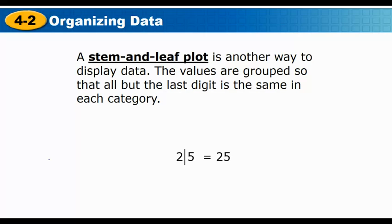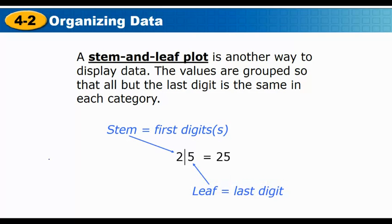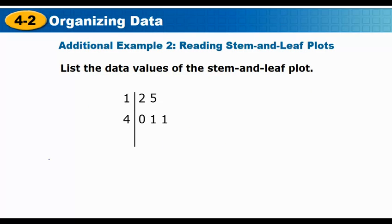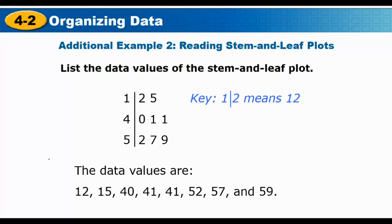A stem-and-leaf plot is another way to display data. The values are grouped so that all but the last digit is the same in each category — for example, '2 | 5' represents 25, where 2 is the stem and 5 is the leaf. To list the data values from a stem-and-leaf plot, the numbers to the left of the line are the tens digits and those to the right are the ones digits. So the data would be: 12, 15, 40, 41, 41, 52, 57, and 59.